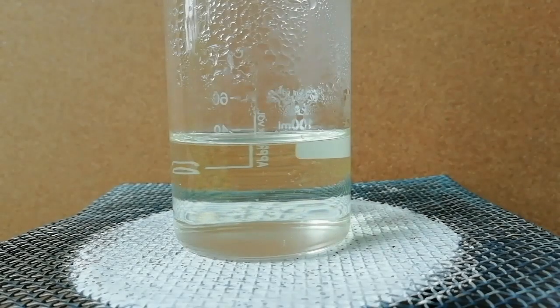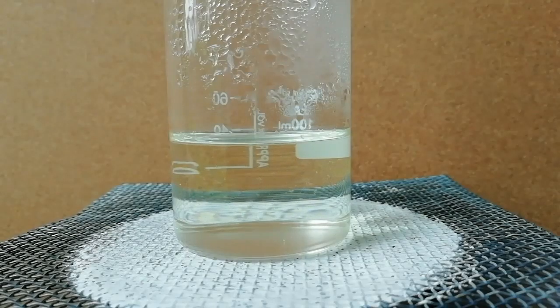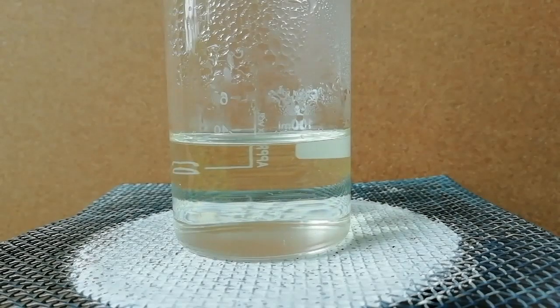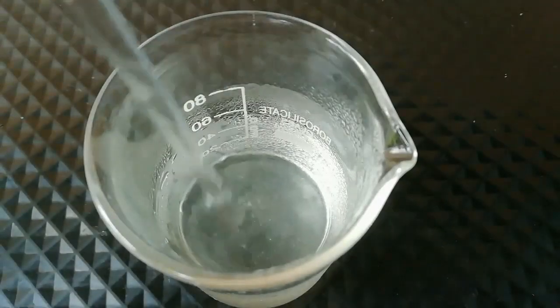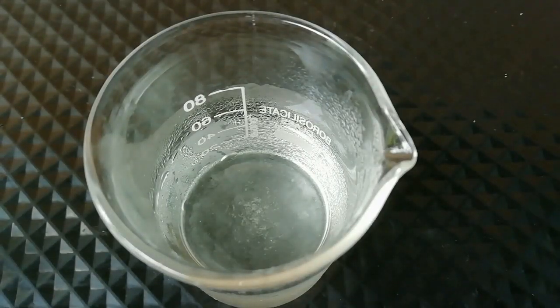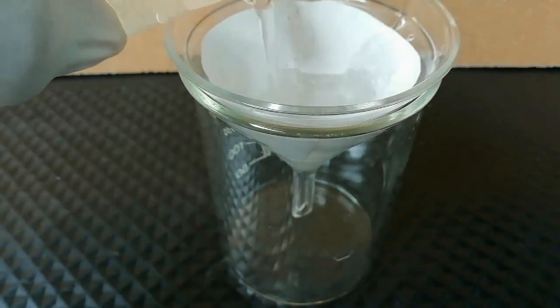Now you can see some potassium iodate is floating in the mixture. Potassium iodate solubility in water is very low, therefore we can remove it by cooling the solution. Then I stopped the heating and cooled down the mixture to 0 Celsius, then I filtered the solution to remove potassium iodate.